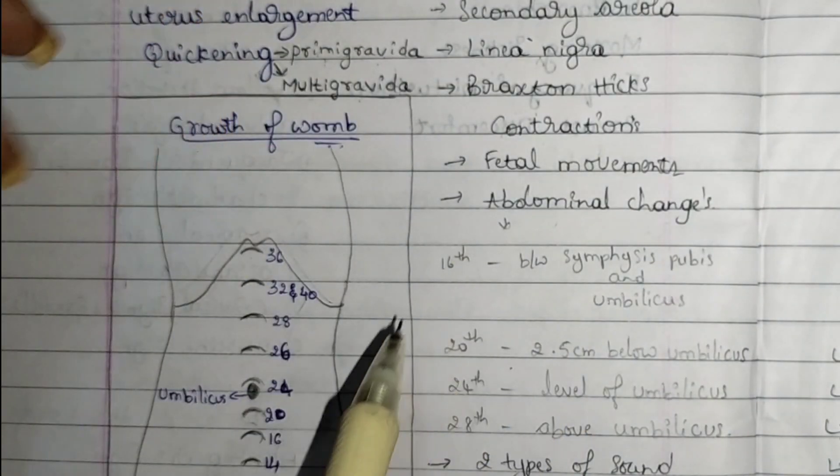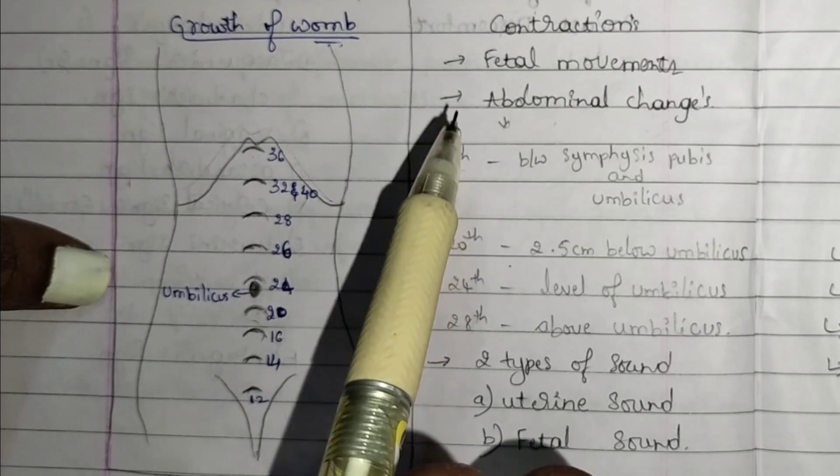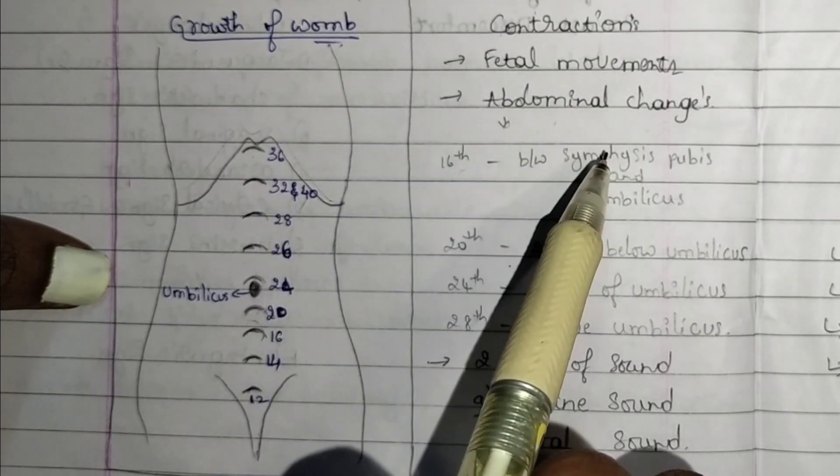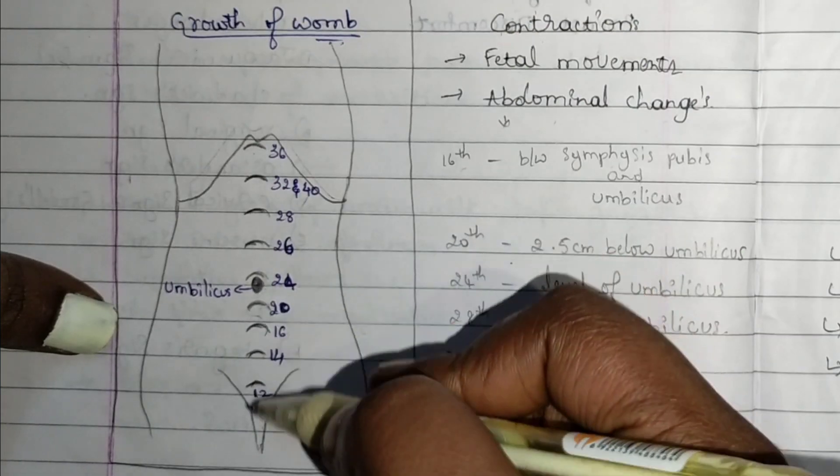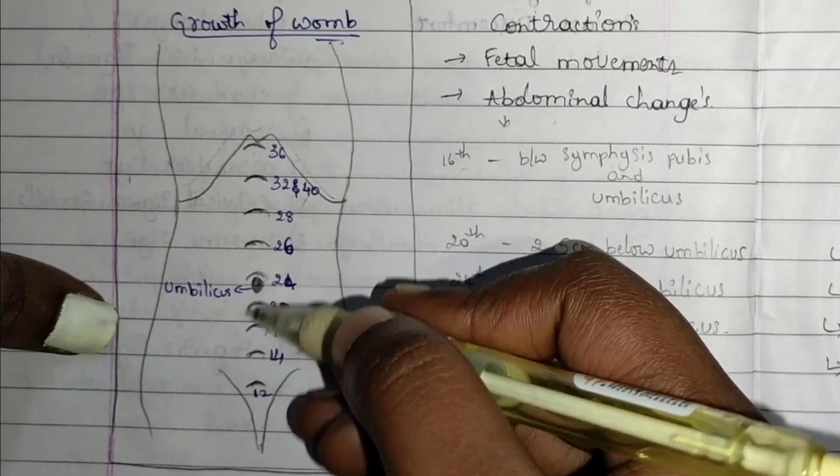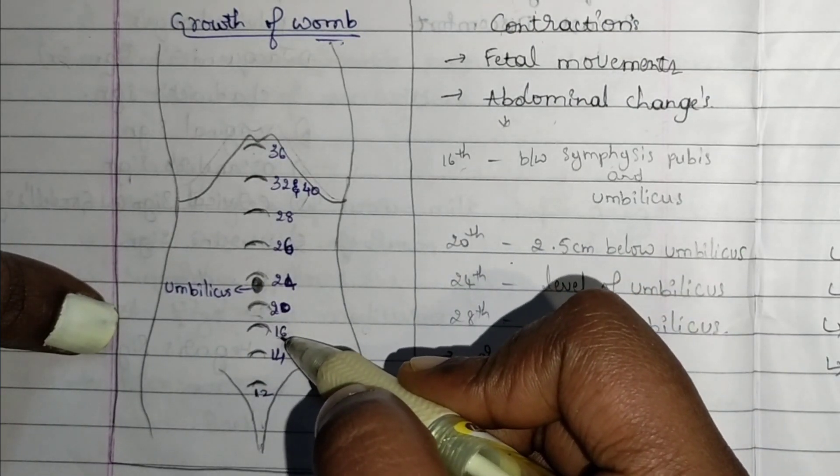At 16th week, the uterus will be present between symphysis pubis and umbilicus. At this stage, the uterus will be expanded to this length.